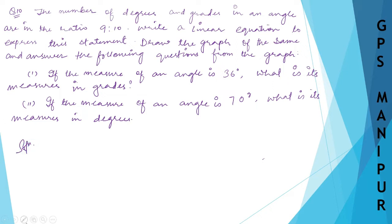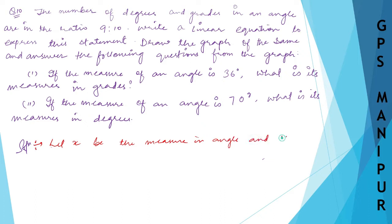Let me change the color of the pen. The question says the number of degrees and grades in an angle are in the ratio 9 is to 10. Find a linear equation to express this statement. So let x be the measure of the angle in degrees, and y be the measure of the angle in grades.